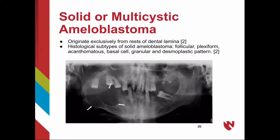The solid or multicystic ameloblastoma originates exclusively from the rests of the dental lamina. Its histological subtypes are follicular, plexiform, acanthomatous, basal cell, granular, and desmoplastic.